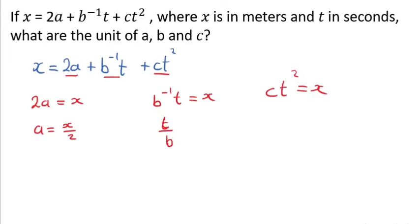Because we have a negative power, so this is what we'll have. If we decide to cross multiply here, we can have it as, hence bx equals t. We just cross multiplied, hence b equals t over x. For this one to make c the subject, c equals x over t squared.